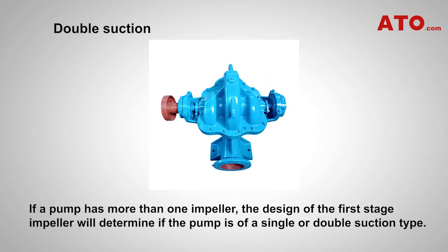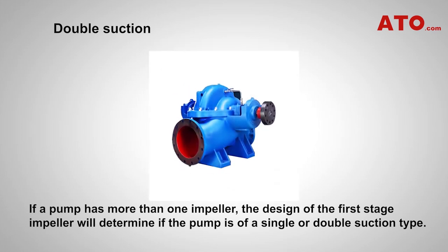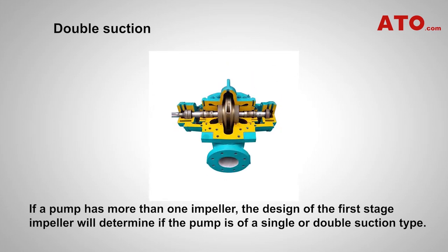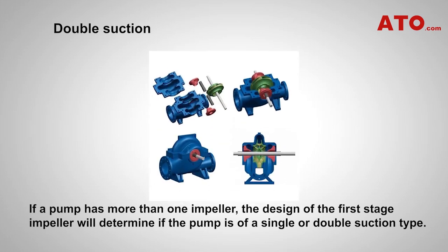Double suction: this type of pump comes with a double suction impeller that allows fluid to enter from both sides of the blades, and has lower NPSHR (net positive suction head required) than a single suction impeller. Split case pumps are the most common type of pump with a double suction impeller.